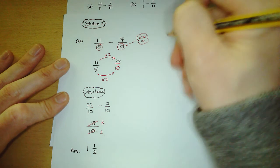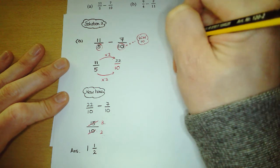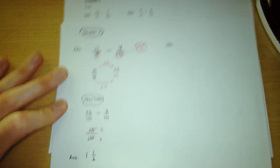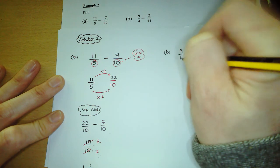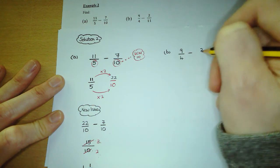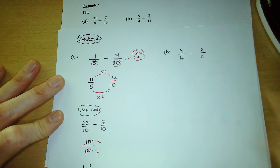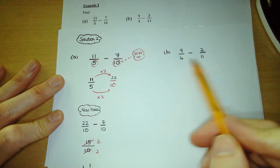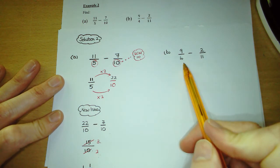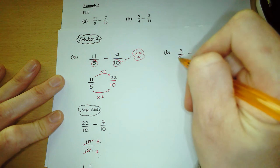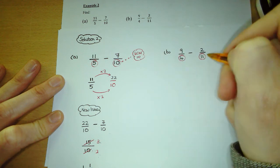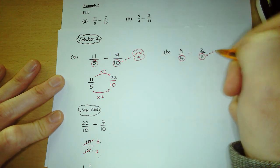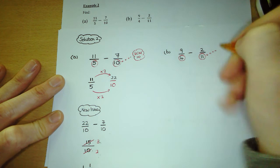OK, part b. We have 9 over 4 and we're subtracting 2 over 11. We can only subtract fractions when their denominators are the same, so we have to get the LCM of the denominators — the smallest number that both 4 and 11 go into — and that's going to be 44.